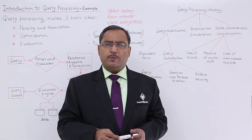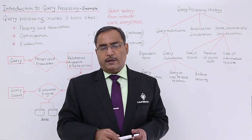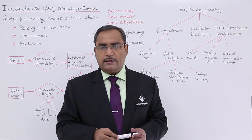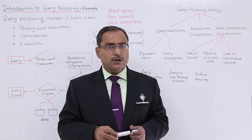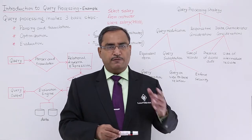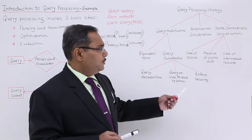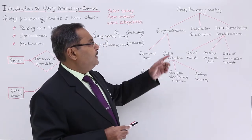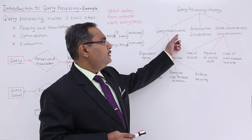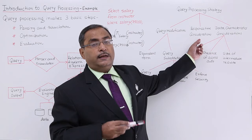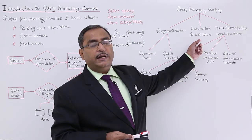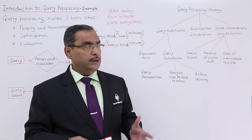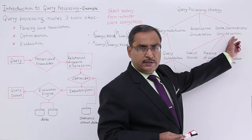Query processing becomes much more complicated in a distributed environment. We should also consider different security measures to make the query correct and optimized before execution. A tree structure will make our conception clear regarding the query processing strategy. Under this we have query modification, response time consideration — that is, how much time it takes to give the output after issuing the query — and data characteristics consideration, meaning what kind of data you are dealing with.